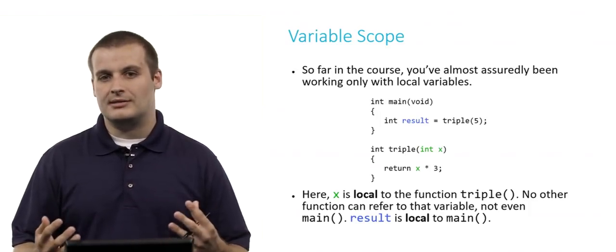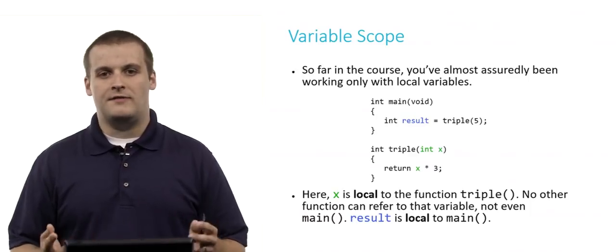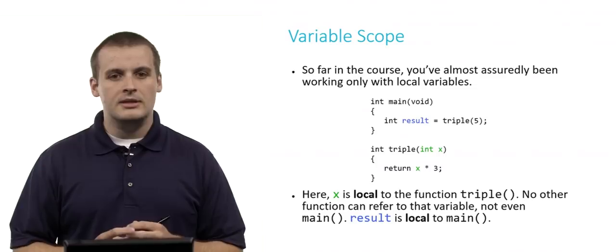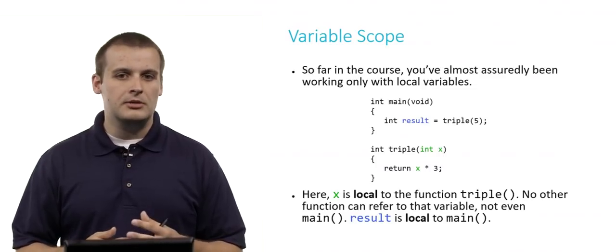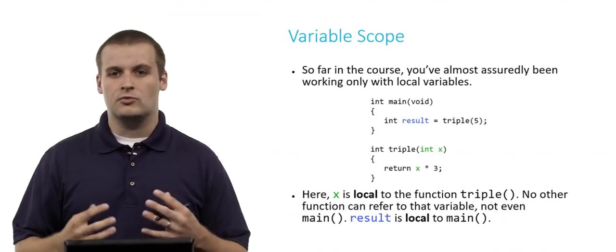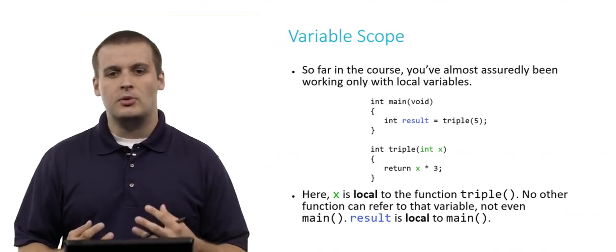Main cannot refer to x at all. It doesn't know what it is. No other function, in fact, if we had additional functions in here, could refer to x. Similarly, result, which I've colored blue, is local only to main. Only main knows what the variable result is. Triple cannot use it.